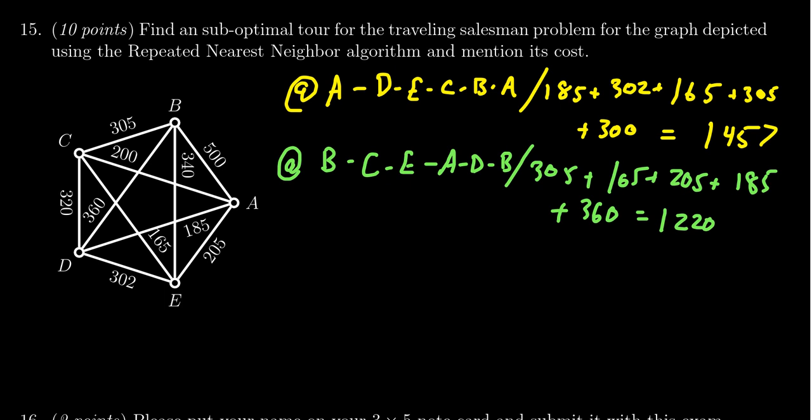1220. Next, we have to look at what happens if we start at C. At C, the nearest neighbor is E at 165. At E, the nearest neighbor is A at 205. At A, the nearest neighbor is D at 185, then you have to go to B and back to C. Our circuit is C to E to A to D to B to C.